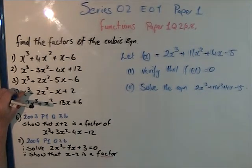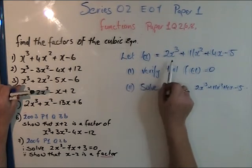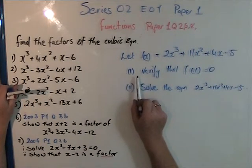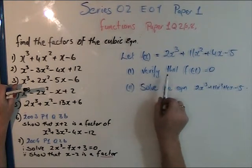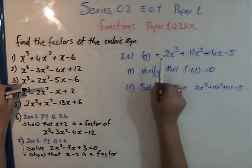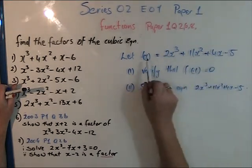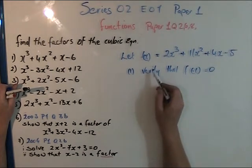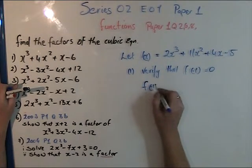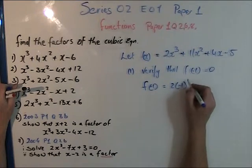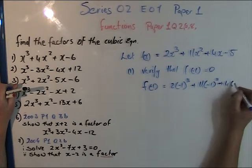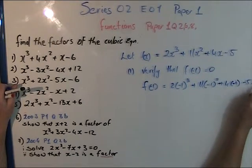So: f(x) = 2x³ + 11x² + 4x - 5. It says verify that f(-1) = 0. That means wherever you see x, put in -1. Then it says solve the equation — I've got to prove this is a root. So I'm going to put -1 into the equation and see if it equals zero, which would confirm it's a root.